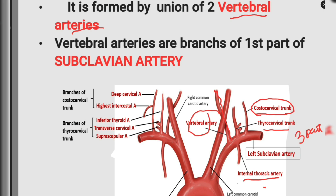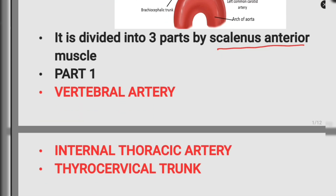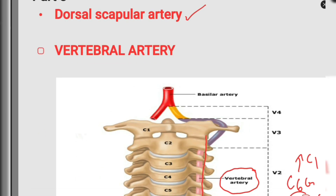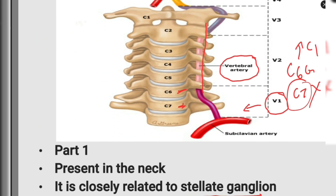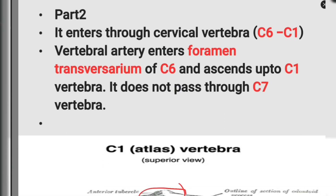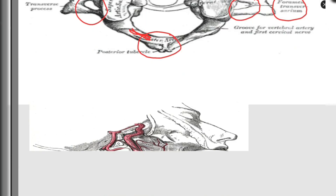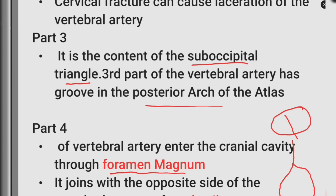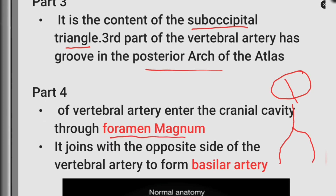To summarize: the vertebral artery is a branch of the first part of the subclavian artery and has four parts. Part one is in the neck near the stellate ganglion; part two goes from C6 to C1 through the foramen transversarium; part three is in the suboccipital triangle; and part four enters the cranial cavity through the foramen magnum to join the opposite vertebral artery and form the basilar artery.